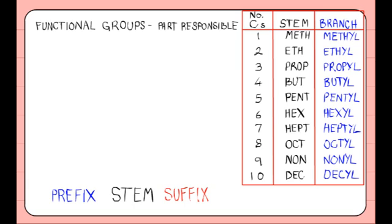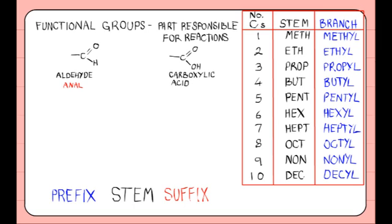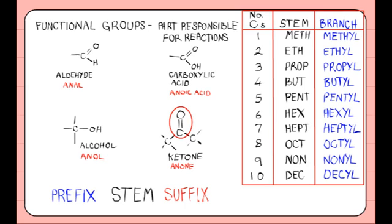Functional groups are the part of the molecule responsible for the reactions. There are various functional groups, and these affect the suffix of the name. Aldehydes have the suffix '-anal'. Carboxylic acids '-anoic acid'. Ketones '-anone', but you do need to state the position of the C=O group, like you do with alkenes. Alcohols have the suffix '-anol'. You need to state the position of the OH group in alcohols when there is more than one possibility.